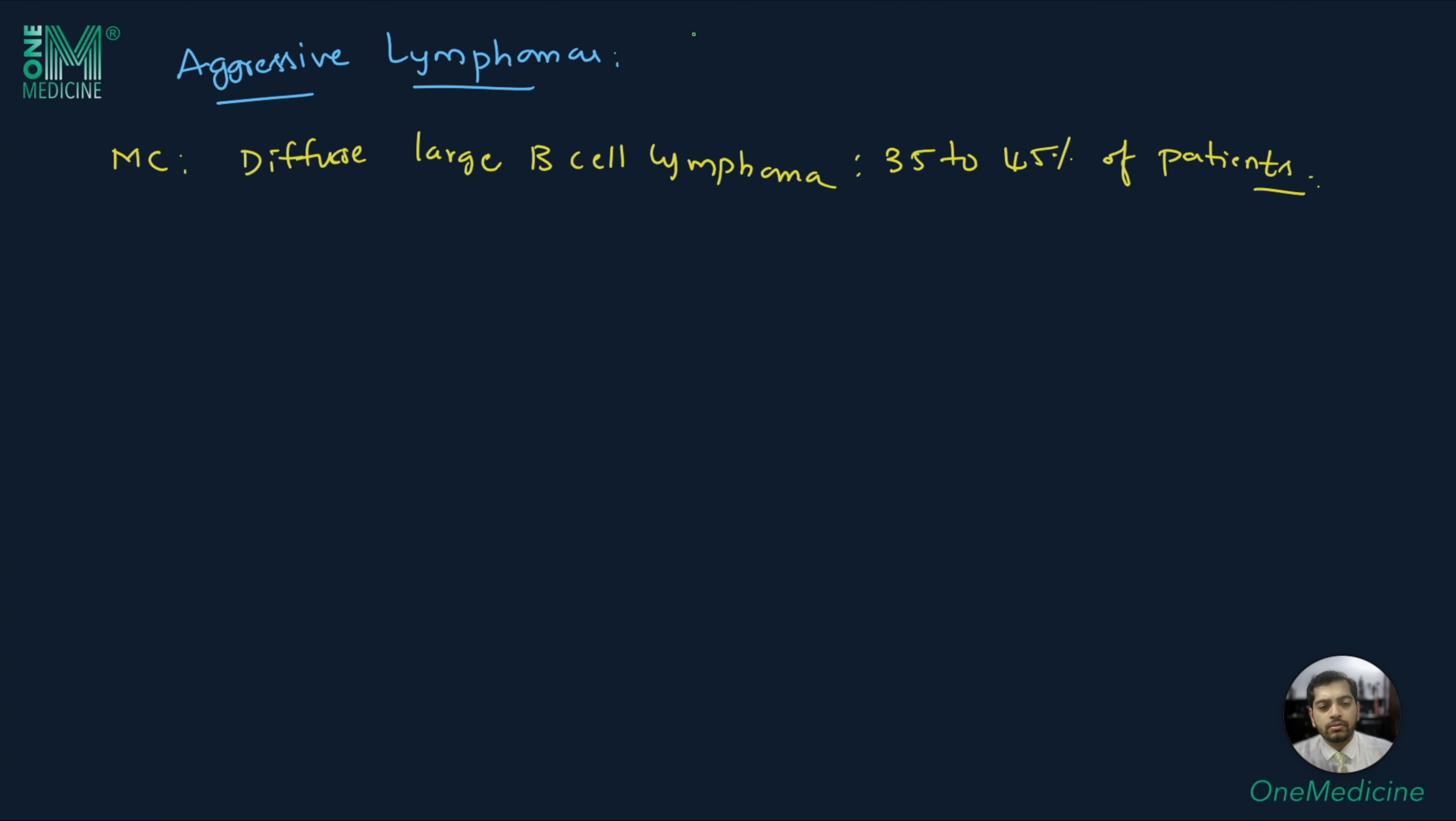The aggressive lymphoma itself accounts for approximately 60% of all lymphomas. About 85% of the patients with aggressive lymphoma have mature B cell origin, and about 15% have post-thymic T cell origin.